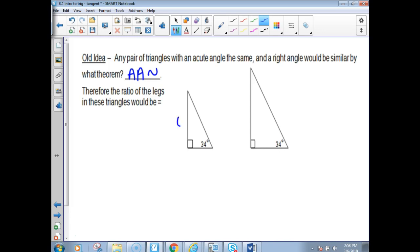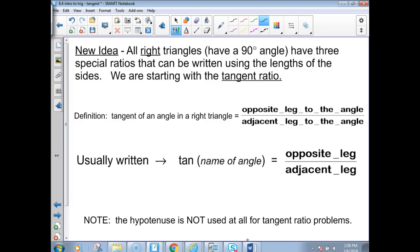For example, if this was 6 and this was 12 and this was 3 and this was 6, then the ratio of those sides, 6 is to 12 as 3 is to 6, would need to be the same. And that's 1 half to 1 half. That's where trig comes into play now that all right triangles that have a 90 degree angle have three special ratios that can be written using the lengths of the sides. We're going to start with the tangent ratio today.